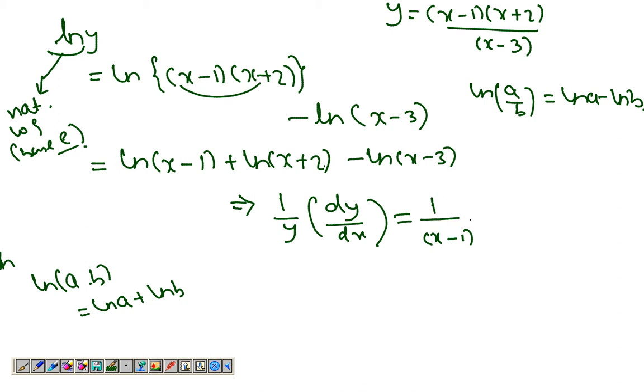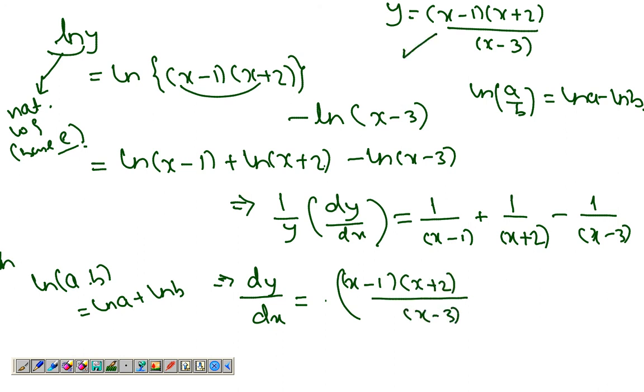Plus 1 over (x plus 2), minus 1 over (x minus 3). So dy/dx is simply y, where y is (x minus 1)(x plus 2) over (x minus 3) from the original equation, times this whole thing. So that's the answer. That's where you use logarithmic differentiation - for long products and quotients.